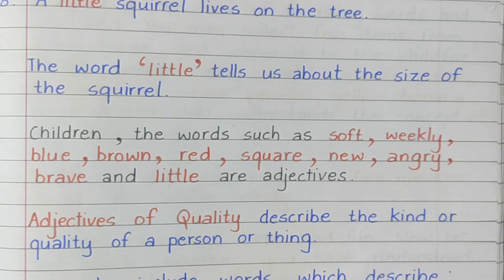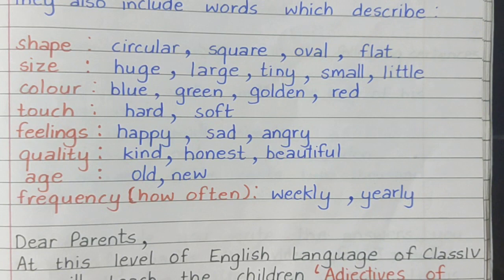Adjectives of quality describe the quality of a person or thing. They also include words which describe shape, size, color, touch, feelings, quality, age and frequency.